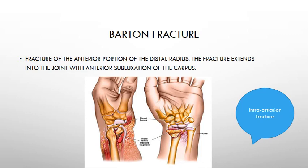A Barton-type fracture is an intra-articular fracture. It involves a fracture of the anterior portion of the distal radius extending into the joint with an anterior subluxation of the carpus. This type of fracture requires operative intervention.